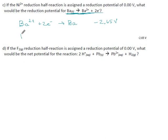But the reaction they're talking about here actually is barium oxidizing to barium ions, which means if we flip this reaction around, what happens to the voltage? It should become positive 2.65 volts.